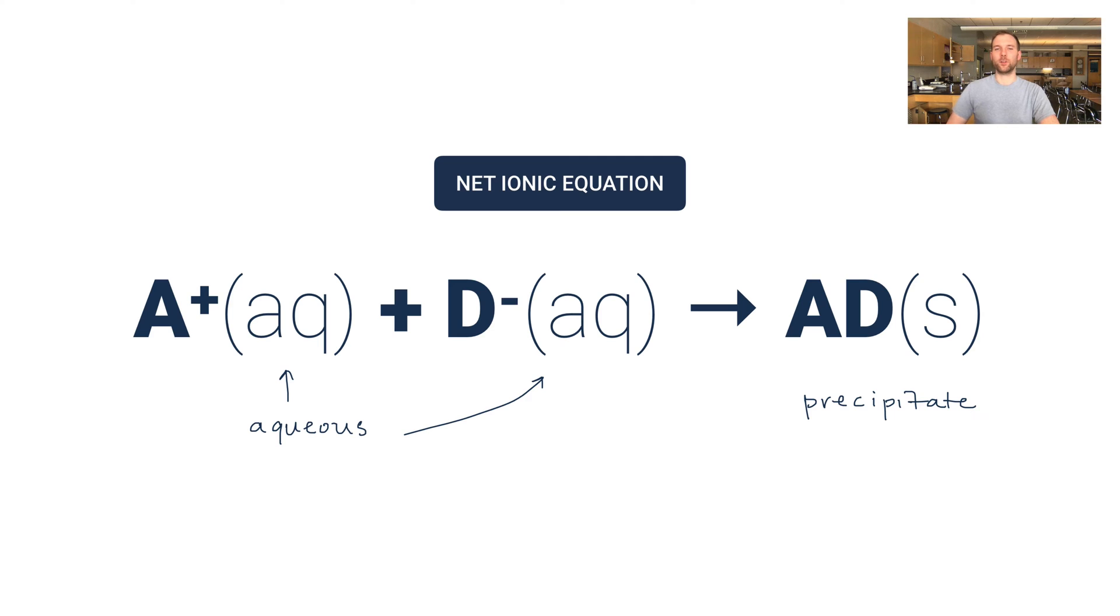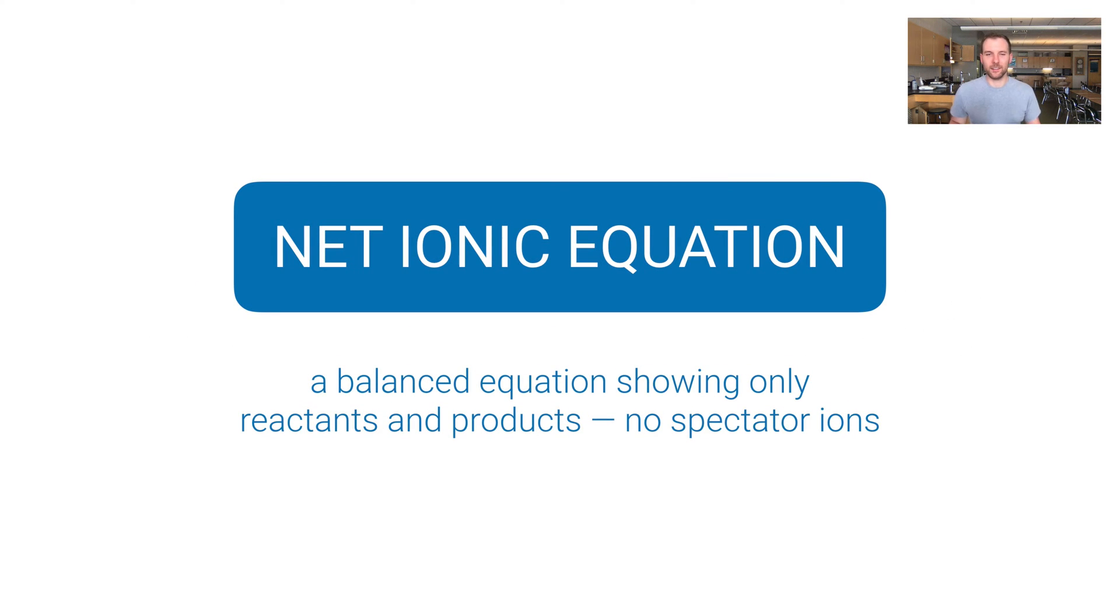Spectator ions are kind of like the bus driver for an away game. If you're on a team the bus driver is getting you to an away game. They're crucial to get you there. Once you're there the bus driver doesn't participate in the game, that's all you at that point. Spectator ions are like the bus drivers and these actual net ionic equation players are the players on the team. The spectator ions are just the vehicle for getting A plus and D minus together to form AD. So let's talk about then the definition for a net ionic equation. It's a balanced equation showing only reactants and products for a precipitation reaction and there are no spectator ions involved.